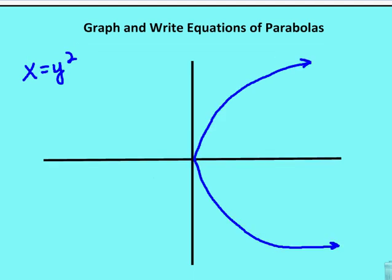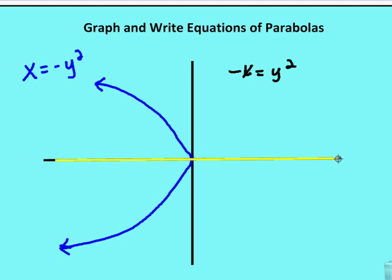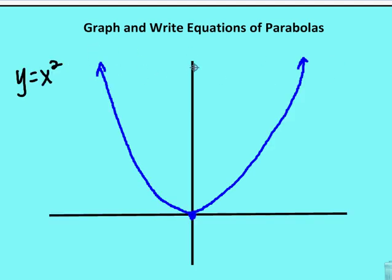The other cases are when x is equal to y squared — the squared value is on the y — and that's when the parabola opens to the right. Or when x is equal to negative y squared, the parabola opens to the left. In this case, the axis of symmetry is horizontal, running right through the vertex. So when the y value is squared, the axis of symmetry is horizontal; when the x value is squared, the axis of symmetry is vertical.